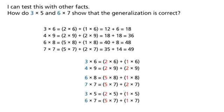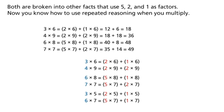How do 3 times 5 and 6 times 7 show that the generalization is correct? Both are broken into other facts that use 5, 2, and 1 as factors. Now you know how to use repeated reasoning when you multiply.